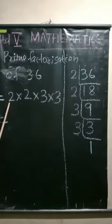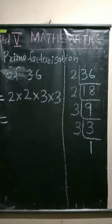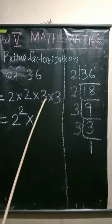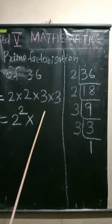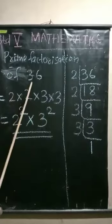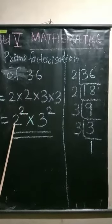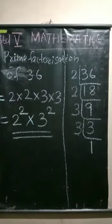The number 2 repeats 2 times, so the exponential form of 2 × 2 is 2 raised to 2, or 2 squared. Then 3 repeats 2 times, so 3 raised to 2, or 3 squared. So the exponential form of 36 is 2 raised to 2 into 3 raised to 2. Understood? Okay, study well. Thank you.